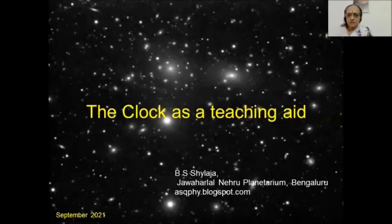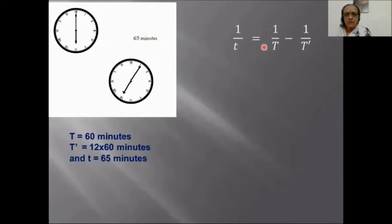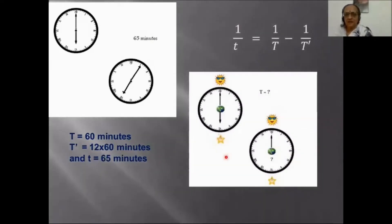Now I will share the formula. The idea is to use the clock as a teaching aid. In the formula, T is the period of overlap, capital T is the orbital period of one body, and T-dash is the other period. You can verify easily how you get 65 minutes. The first example is two stars: one period is 23 hours 56 minutes and the other is 24 hours. The overlapping period turns out to be 365 days, which reflects the orbital motion of the earth around the sun.